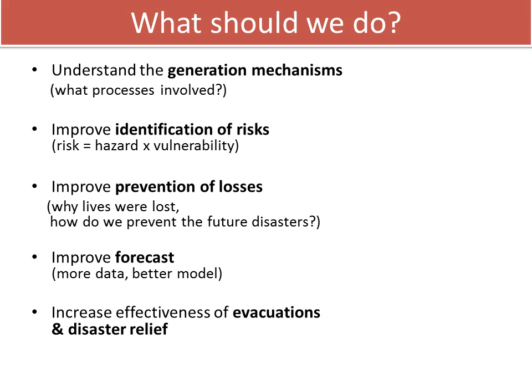So what should we do? Here comes the checklist for prevention of natural disasters. You need to understand the generation mechanisms — what physical processes are involved. You want to improve the identification of risk, knowing that risk is not controlled by the hazard itself, but also the vulnerabilities of a given area. You want to improve the prevention of losses and prepare for the next event with a short-term preparedness plan, improve long-term forecast models with more data and better models, and most importantly, increase the effectiveness of evacuations and disaster relief.